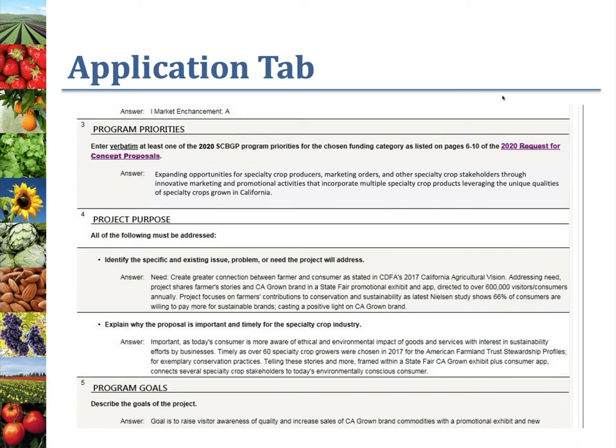The next section is the Questionnaire. This is the part of the application where you will critically review information such as the funding category, project goals, project beneficiaries, project duration, etc. Be sure to read these carefully to determine two things: is this proposed project a priority for the specialty crop industry, and what is this project's likelihood for success? If any applicants have included links, please don't open them — applicants were instructed not to include them as a means to circumvent character limits.